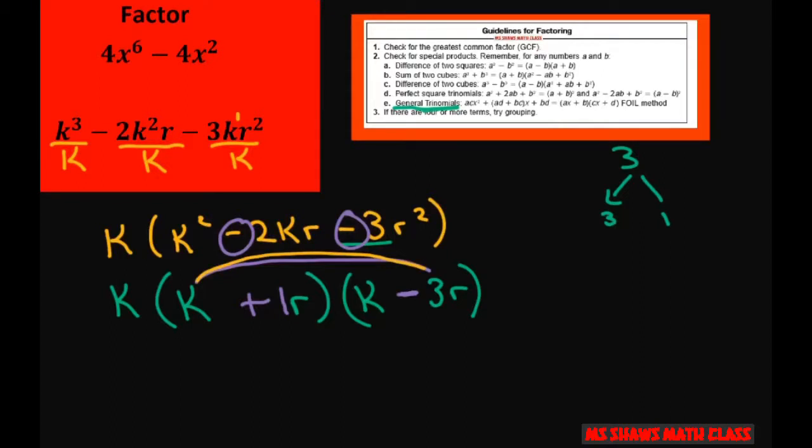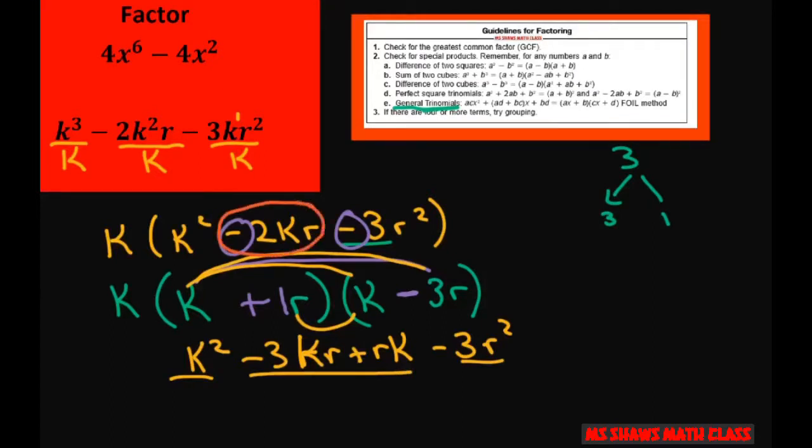So we have the outer. We know the first is k squared. And then the outer is going to be 3kr. And the inner is going to be plus rk. And the last is going to be minus 3r squared. So we got the first and our last. And this is negative 2kr. So what we did is we did it correctly.